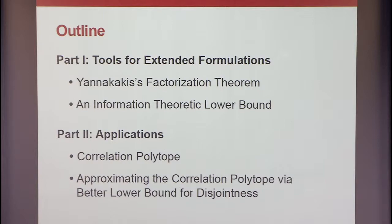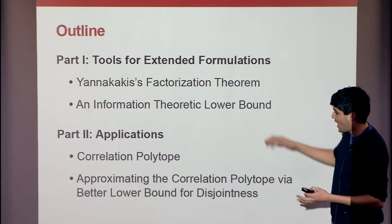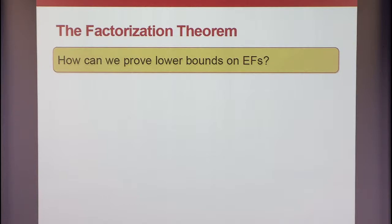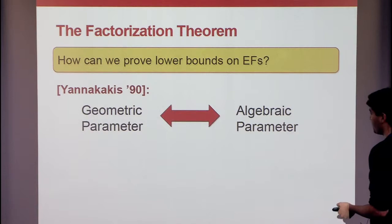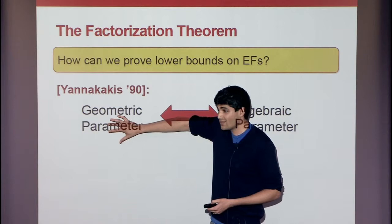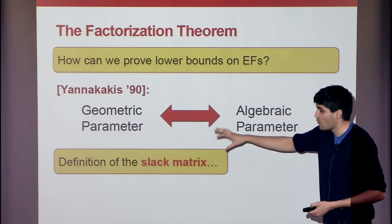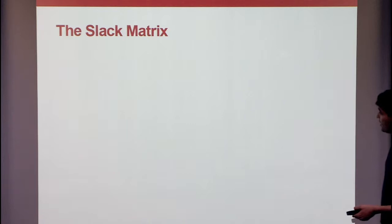Let me tell you about Yannakakis' program and where information theory fits in. First I'll describe his general connection between geometry and algebra. His factorization theorem addresses the question of how to prove lower bounds against extended formulations. He proved that the extension complexity of a polytope — this geometric parameter — is exactly related to an algebraic parameter of an object called the slack matrix. It's a complete, equivalent reformulation. The slack matrix encodes the rough geometry of the polytope, which is what you want to preserve through an extended formulation.